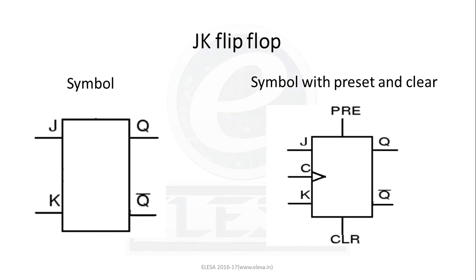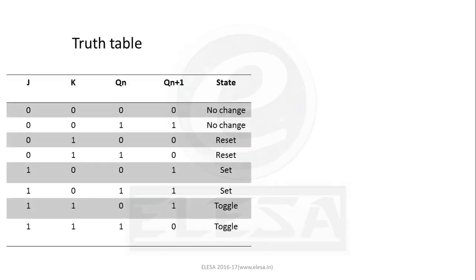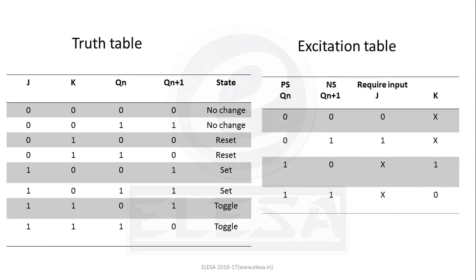In the circuit diagram, the Q output is fed back to the K input, and Q bar is fed back to the J input, along with the clock input. When J equals 0 and K equals 0, no change takes place. When J equals 0 and K equals 1, the flip-flop is reset to 0. When J equals 1 and K equals 0, the flip-flop is set to 1. When J equals 1 and K equals 1, the flip-flop goes into toggle mode.